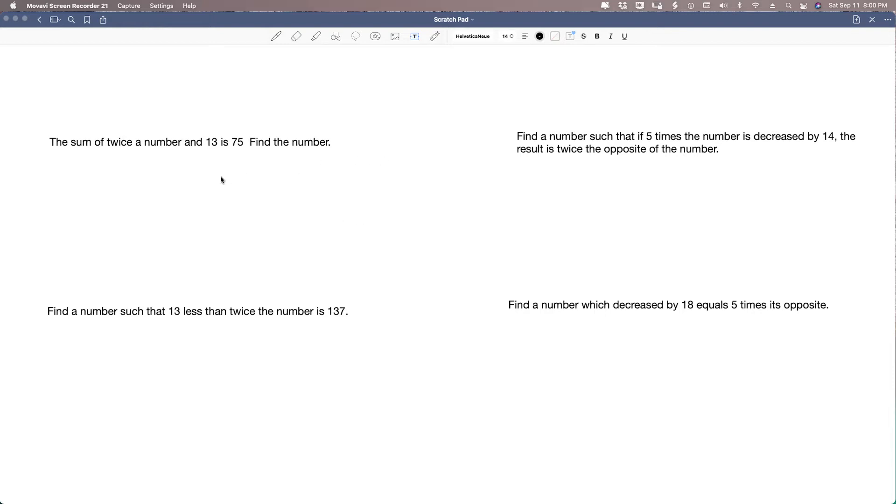Let's look at the first one, which is 32.1. And it says the sum of twice a number and 13 is 75. This one's pretty straightforward. The sum of twice a number and 13 is 75. Find the number.